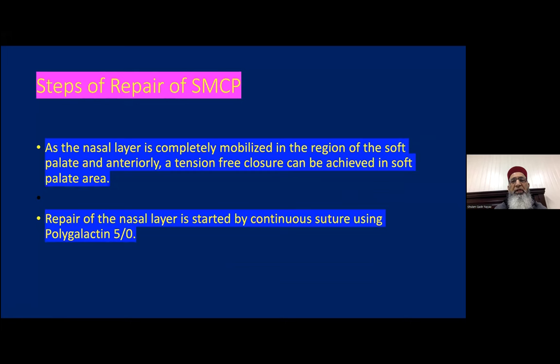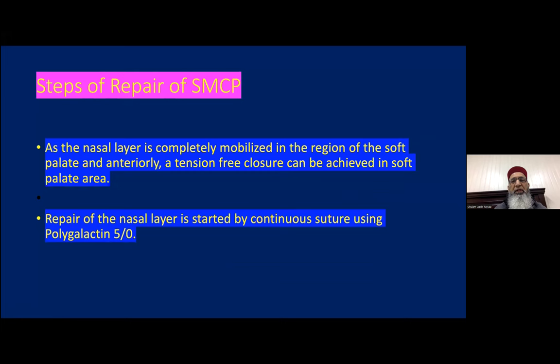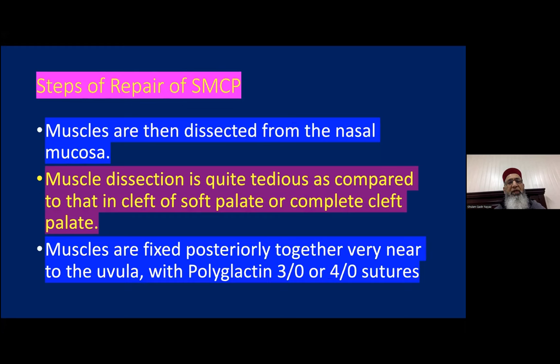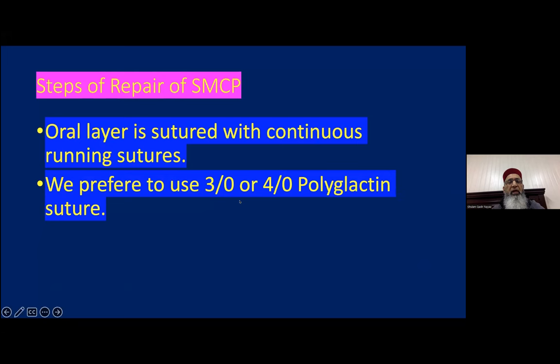We then separate the nasal and oral layers of the midline mucosa. The oral layer — the soft palate mucosa — is separated from the muscular part using long tenotomy scissors and blunt dissection with periosteal elevators on both sides. Once the nasal layer is completely mobilized, a tension-free closure can be achieved in the soft palate area. We use 5-0 polyglactin for the nasal layer with continuous sutures, then dissect the muscle from the nasal mucosa on both sides. Muscle dissection is more tedious than in overt cleft palate. We fix the muscle posteriorly using 3-0 or 4-0 polyglactin sutures, and use running continuous sutures for the oral layer as well.